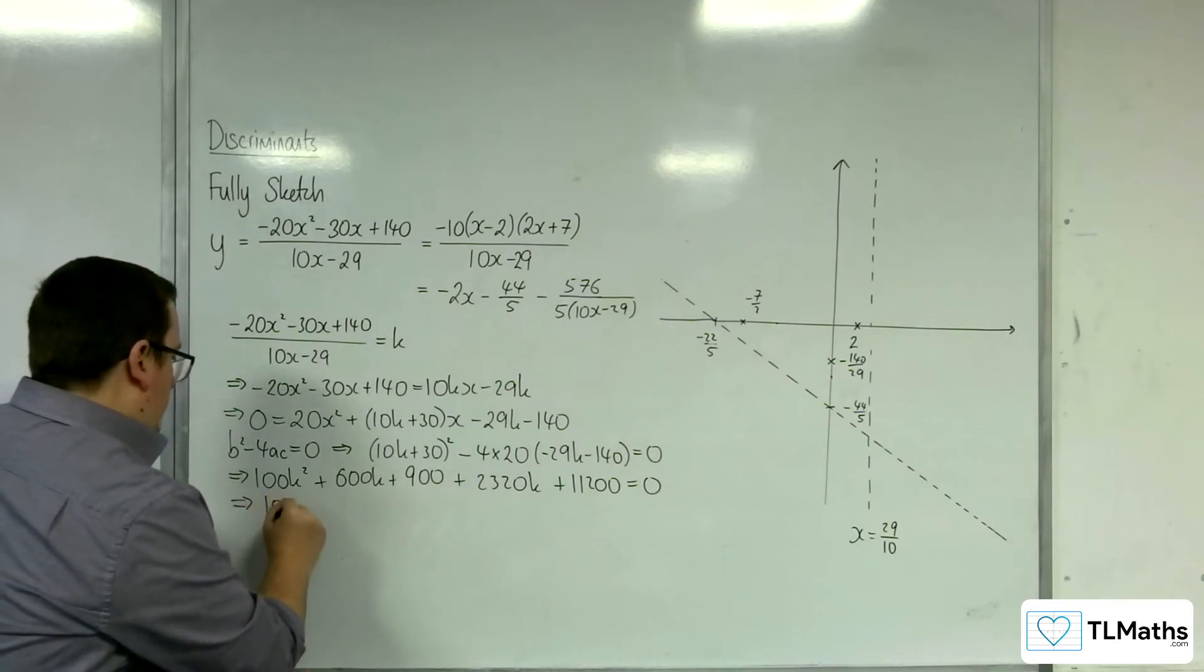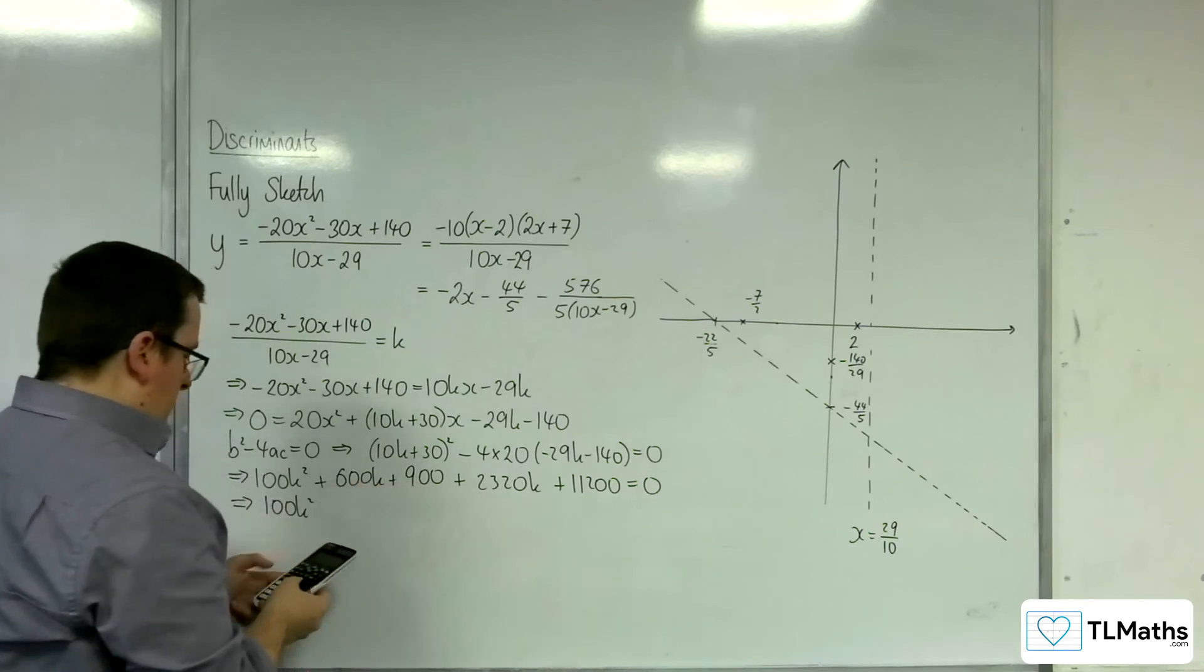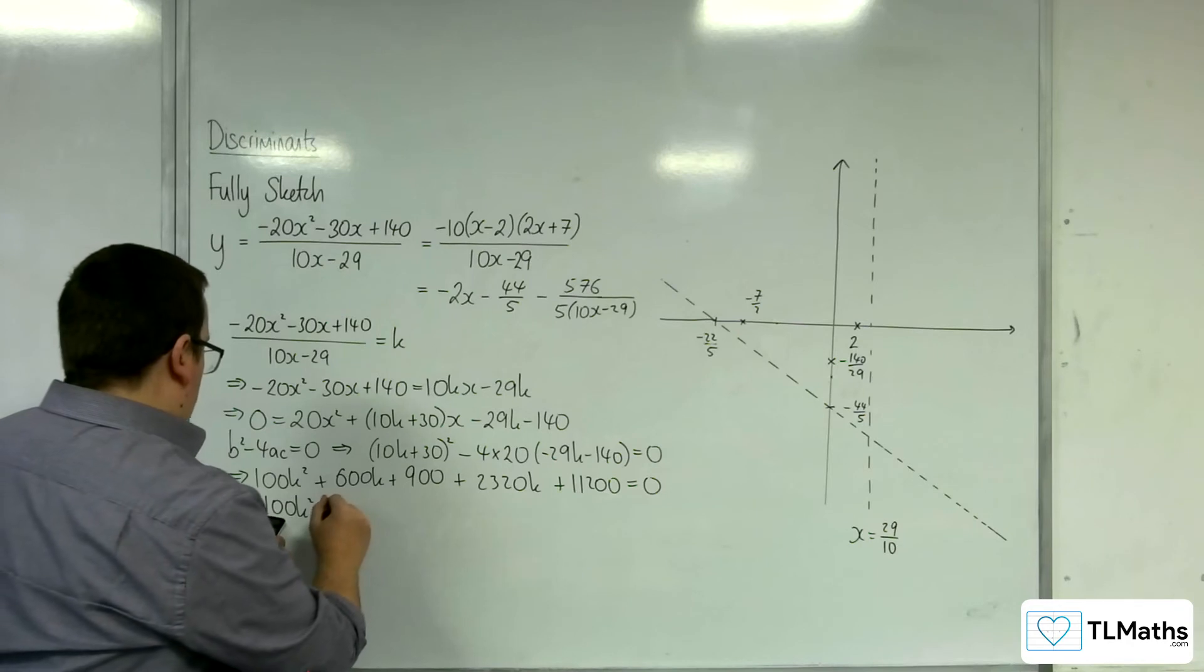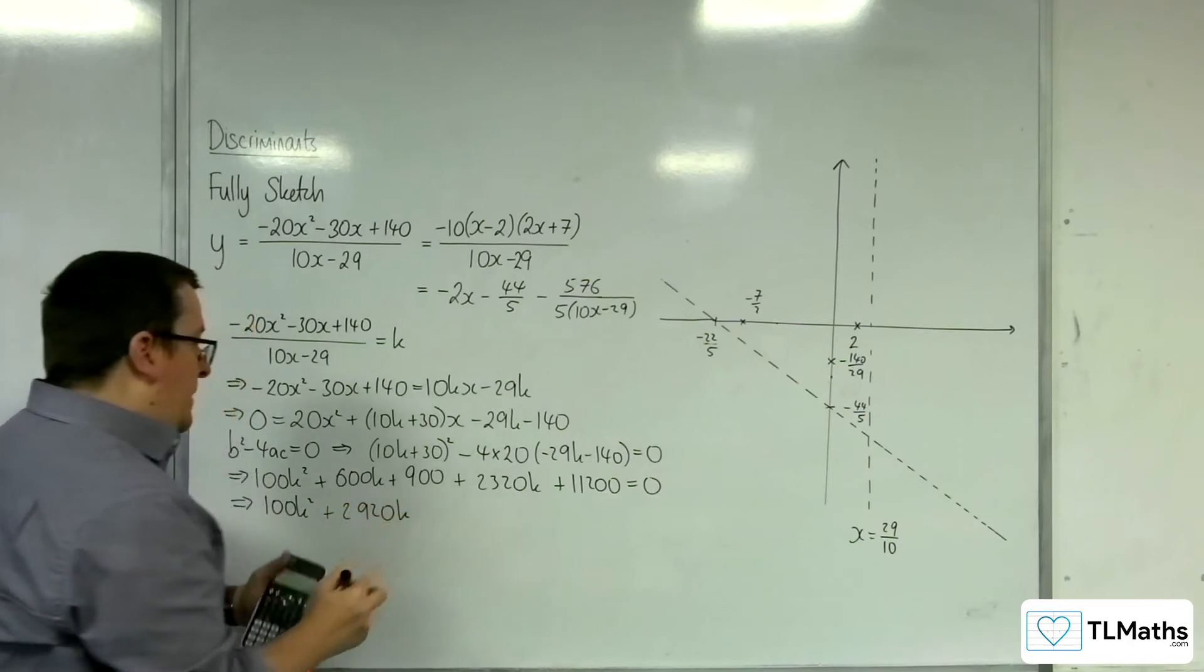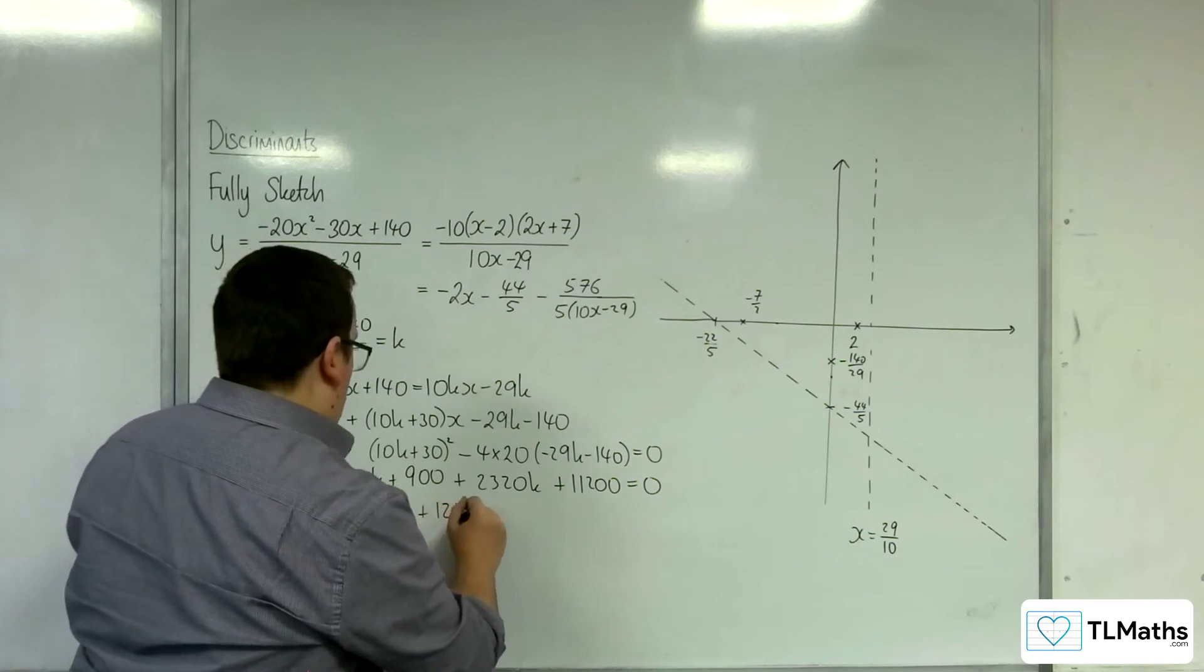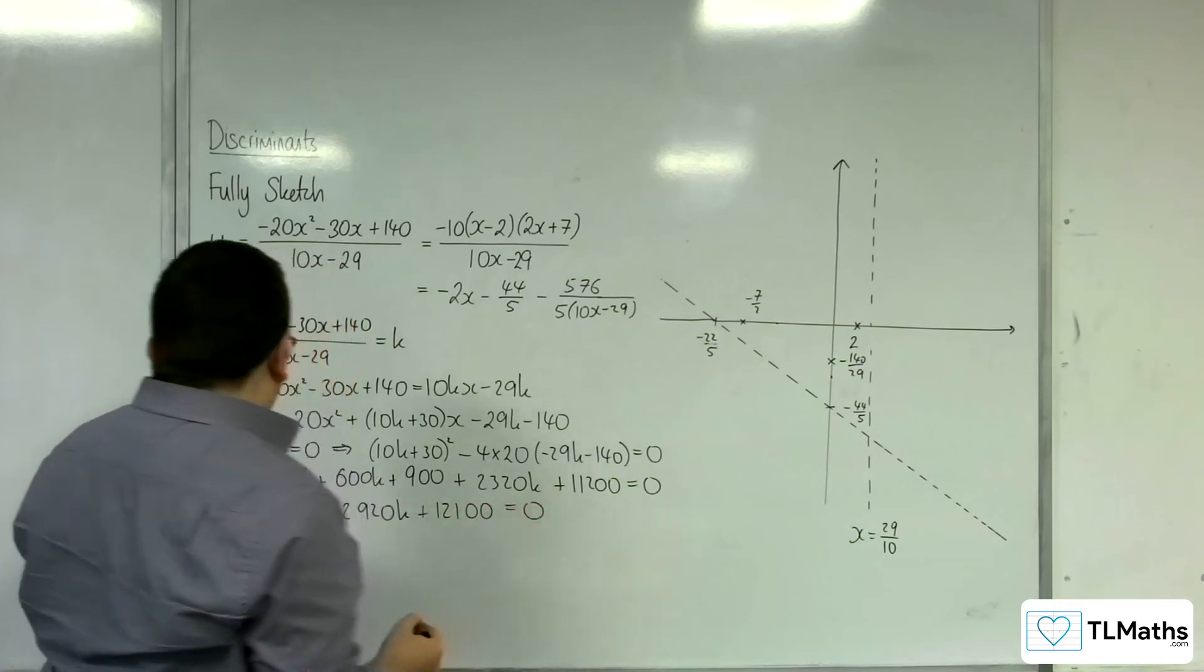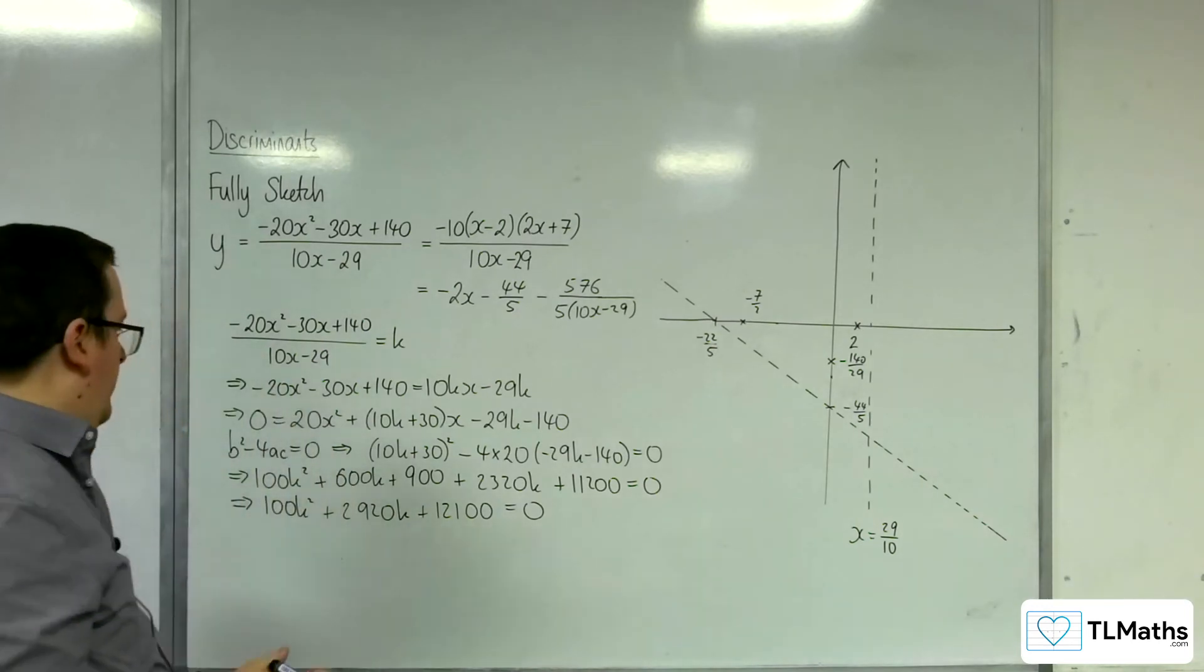So we've got the 100k squared, we've got 2,920k. I don't know why I needed the calculator to do that. There's too many numbers on the board. 900 plus that, so 12,100. I don't want to make any silly little error here. Okay, so now I want to factorize this.